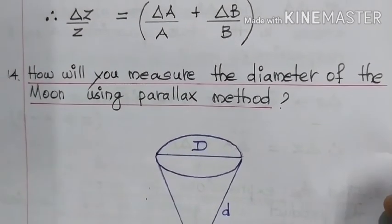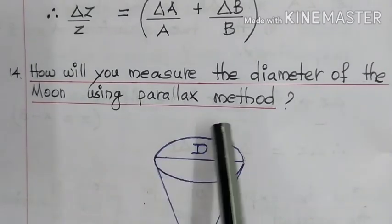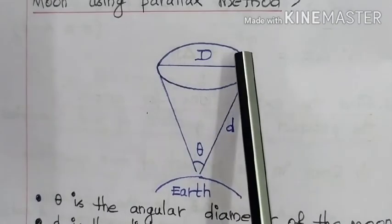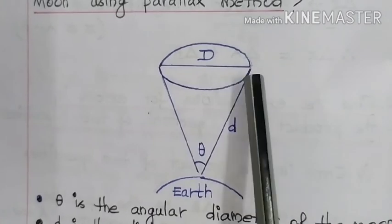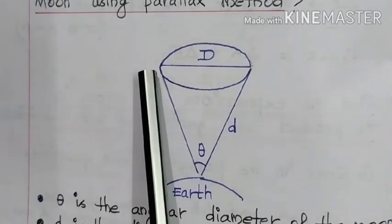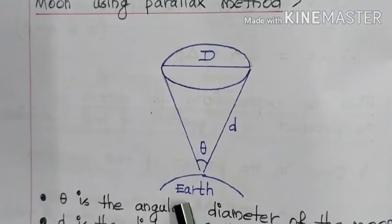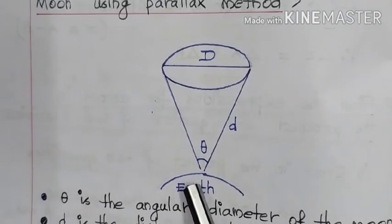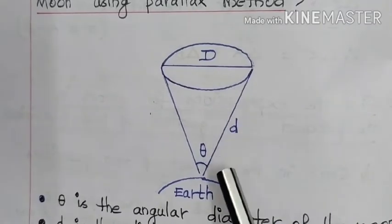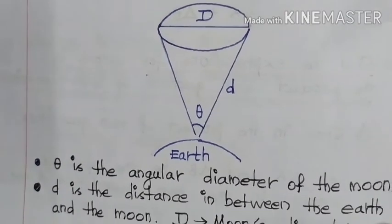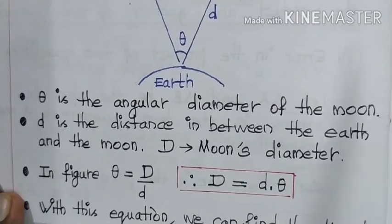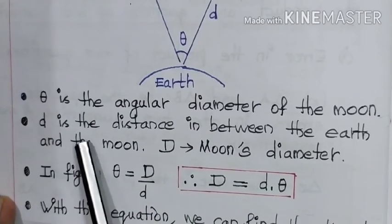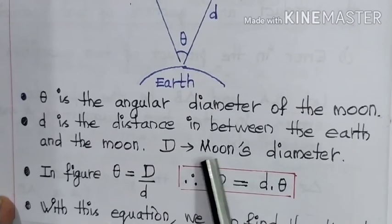Next question: How will you measure the diameter of the moon using the parallax method? Here we need to draw a small supportive diagram. Here is the earth and here is the moon. This is the diameter of the moon. From the two edges of the moon, we draw two lines which subtend an angle theta at a point. This distance, indicated by small d, is the distance between the earth and the moon. Theta is the angular diameter of the moon, small d is the distance between earth and moon, and capital D is the moon's diameter.